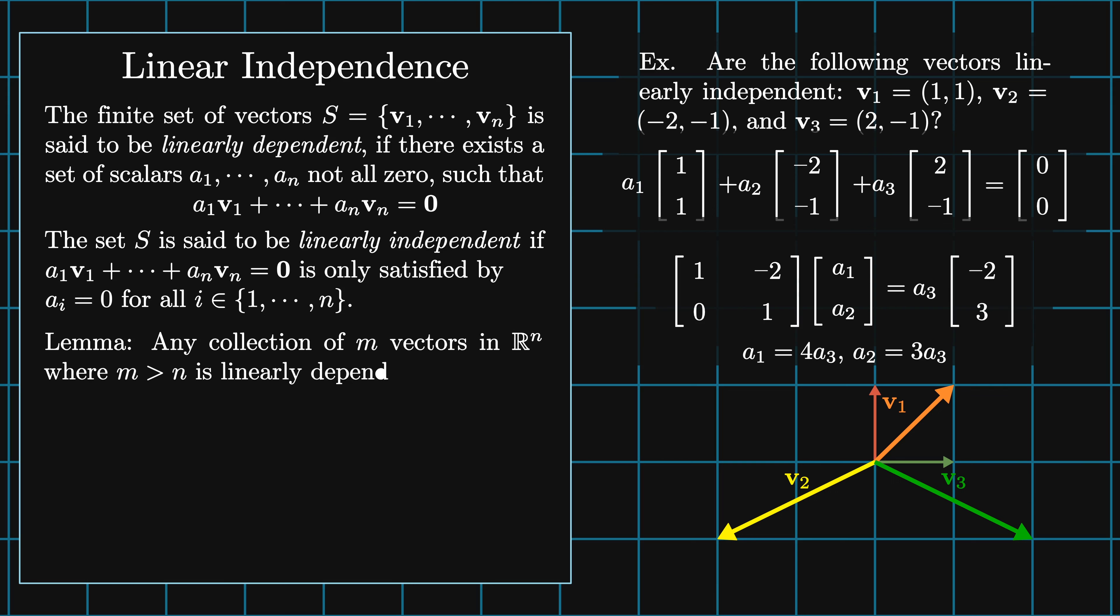Any collection of m vectors in Rⁿ where m is greater than n is linearly dependent. A corollary of this is the set of k vectors in Rⁿ is linearly independent if and only if the rank of the matrix M whose columns are made from the elements of S is equal to k.